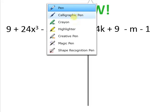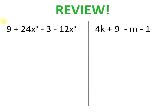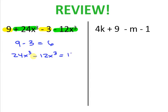First, let's review basic combining like terms, so make sure you have your highlighter with you. Here I have a 9 and a negative 3, and here I have a positive 24x to the third and a negative 12x to the third. So 9 minus 3 is 6, and 24x to the third minus 12x to the third is 12x to the third. My highest power goes first, so the final answer is 12x to the third plus 6.